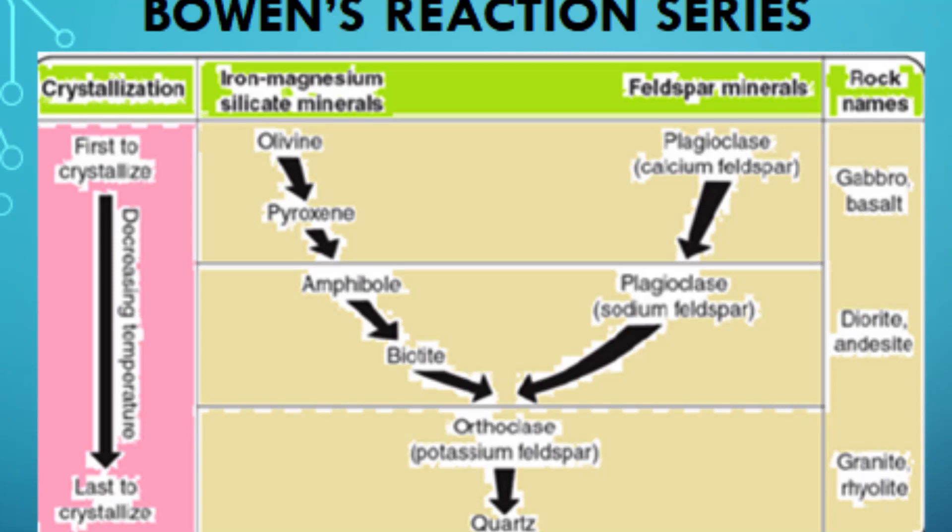The second principle is that crystallization order is predictable. The order in which minerals crystallize follows a specific sequence determined by the melting points and other chemical properties of the minerals, and it remains the same regardless of the composition of the magma.